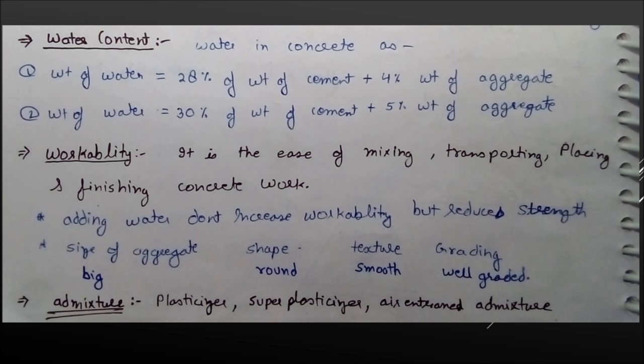Now about the permissible limit of water. Weight of water to be added should be 28% of the weight of cement plus 4% of the weight of aggregate, or 30% of the weight of cement plus 5% weight of aggregate. The value within this range should be used for any cement concrete mix.